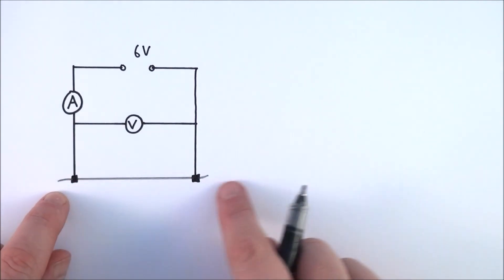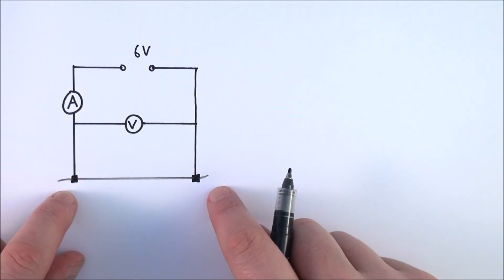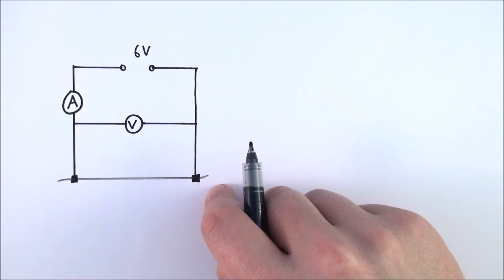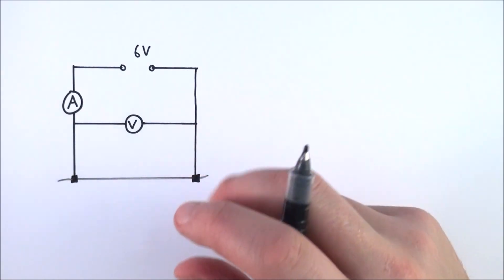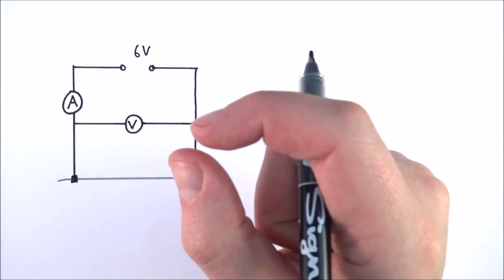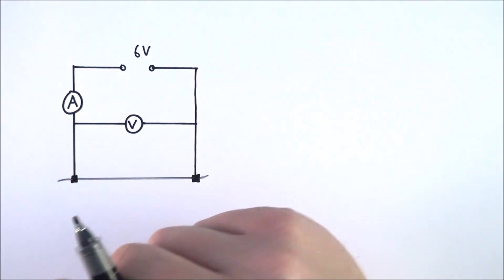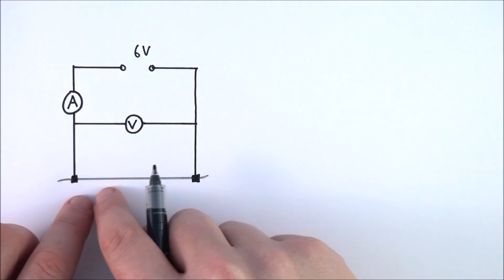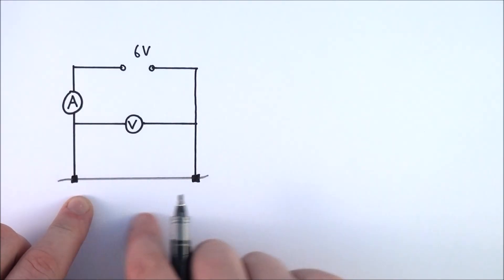Between the two crocodile clips is where you have your sample of wire. Often in the lab we use constantin, about 0.25 of a millimeter thick, so relatively thick. You've got maybe up to about a meter of the wire and that's what you're going to be testing.